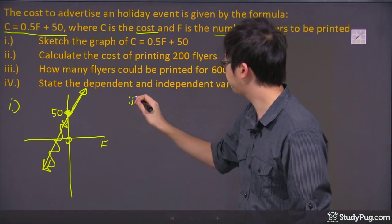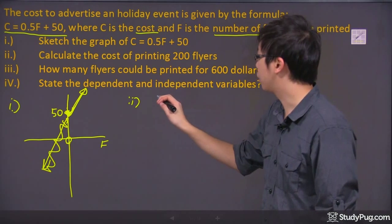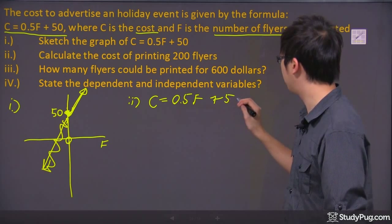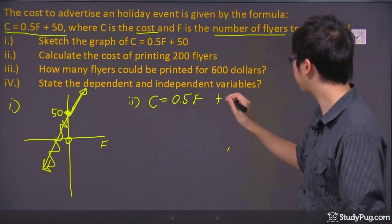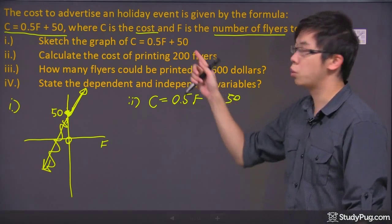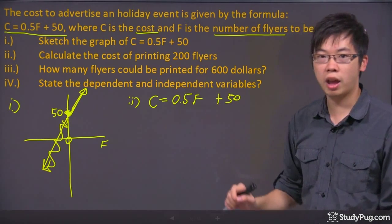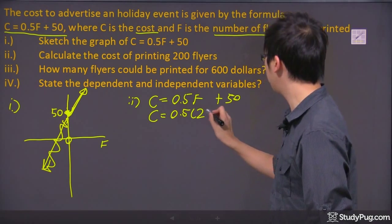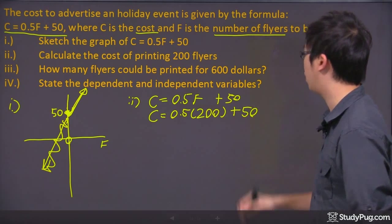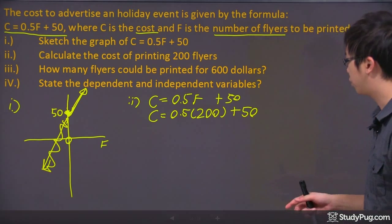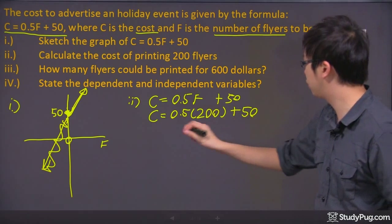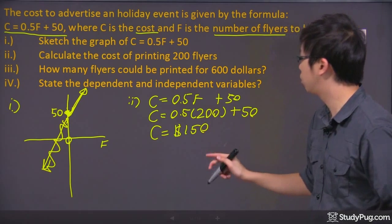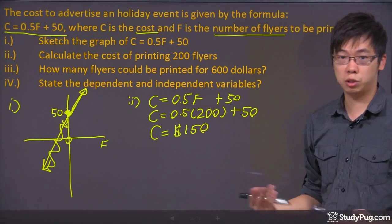Well, we do know the equation says the cost is just 0.5F plus 50, right? So what that means is we're going to plug in 200 flyers in the position of where the F is. So my total cost will be 0.5 times 200 plus $50 at the very end. So you're going to take 200 times 0.5 is just 100 plus 50. You get yourself the total cost to be $150. So to print 200 flyers, you're going to spend $150.